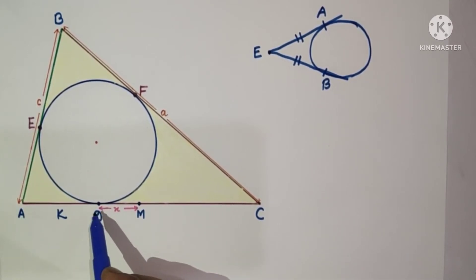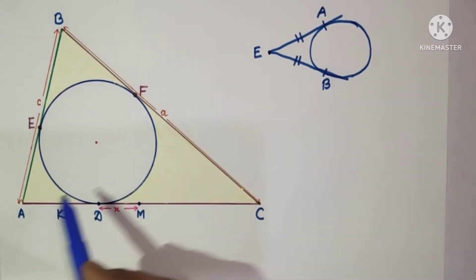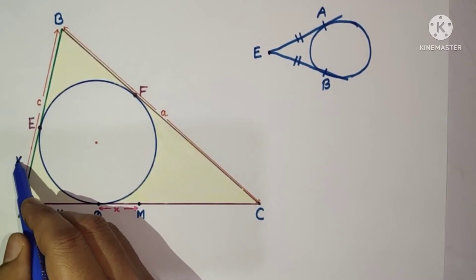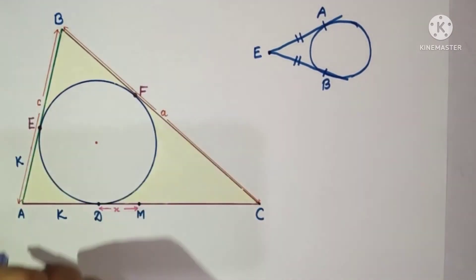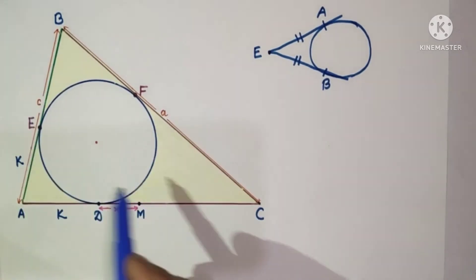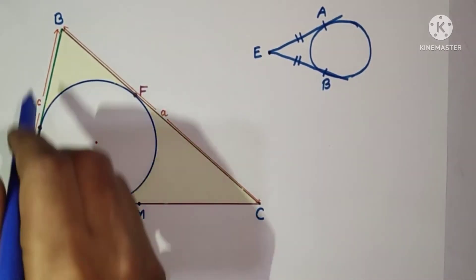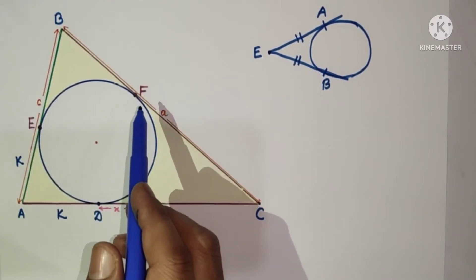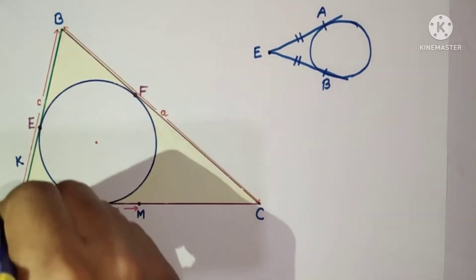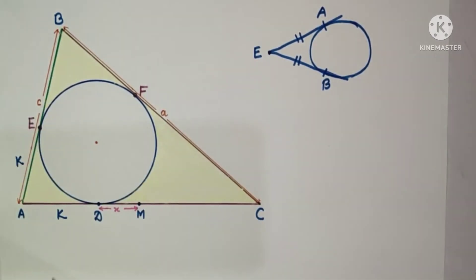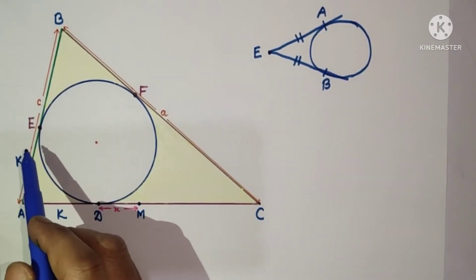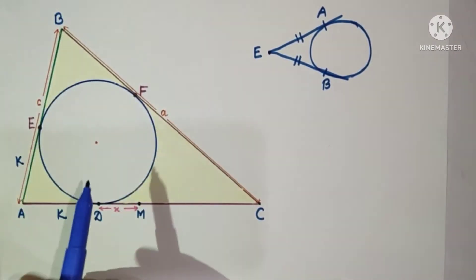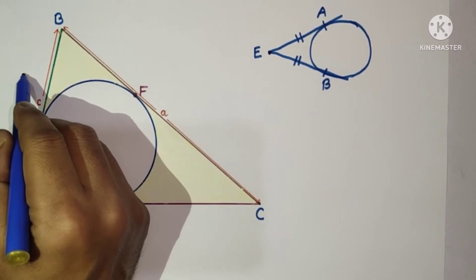Since AD is K, and by the tangent equality property AE equals AD, this AE is also equal to K. The whole length AB — the side opposite to angle C — is c. E and F are the points of contact where the circle touches sides BA and BC. So BE equals the whole length AB minus AE, which gives BE equals c minus K.